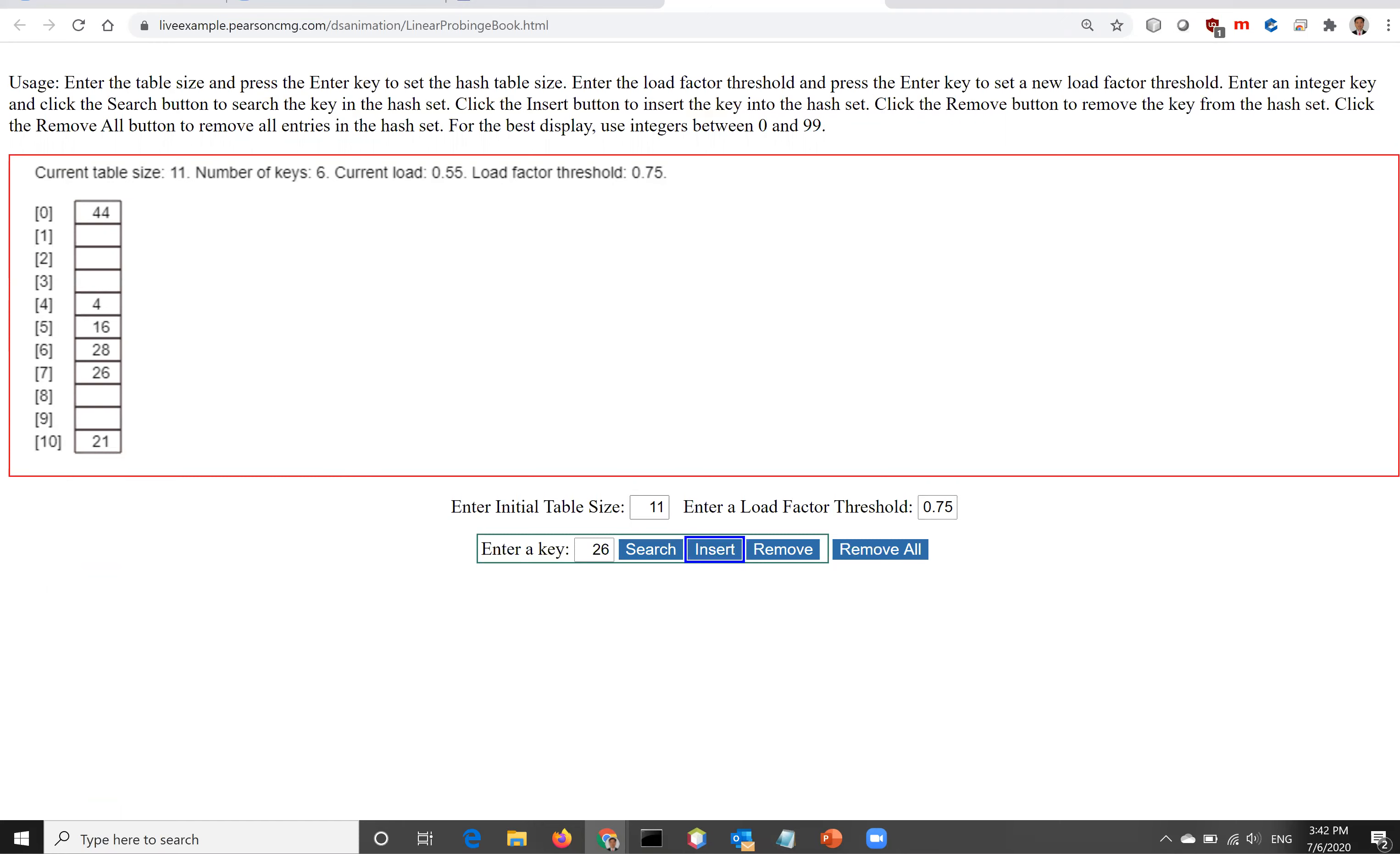In this animation, you can change the table size. The initial size now is 11. Look at this: table size is 11, number of keys right now is 6. The current load is 55%, which means this table is 55% full.